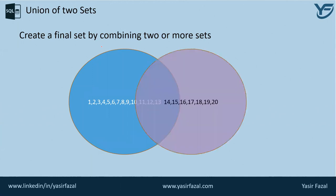And then there is set B which contains numbers 14, 15, 16, 17, 18, and 19. So what does the union mean? Union means we are going to combine all these numbers into only one set.